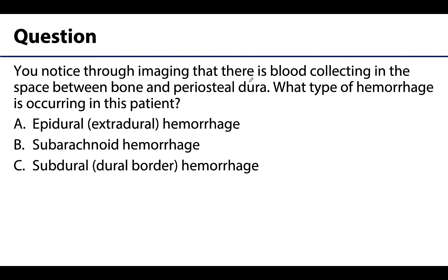Let's quickly review a concept before we finish. You notice through imaging that there is blood collecting in the space between bone and periosteal dura. What type of hemorrhage or hematoma is occurring? Is it a) an epidural or extradural hemorrhage, b) a subarachnoid hemorrhage, or c) subdural or dural border hemorrhage? The key to answering this is the space between the bone and the periosteal dura, which leads to the correct answer: a) epidural hemorrhage. A subarachnoid hemorrhage collects between the arachnoid and pia mater, whereas a subdural hemorrhage collects between the meningeal dura and the arachnoid — both incorrect based on the stem.